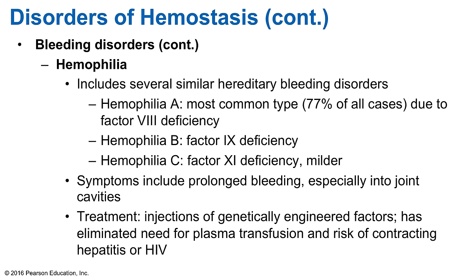Hemophilia refers to several hereditary bleeding disorders with similar signs and symptoms. Hemophilia A (classical hemophilia) is the most common, accounting for about 77% of cases, resulting from a deficiency of factor VIII (anti-hemophilic factor). Hemophilia B results from a deficiency of factor IX and, like hemophilia A, is X-linked and affects males. Hemophilia C is due to a deficiency of factor XI, is less severe, and affects both sexes. Symptoms include prolonged bleeding into tissue and repeated bleeding into joint cavities causing disability and severe pain. Treatment now includes genetically engineered clotting factors, which eliminates the risk of HIV and hepatitis infection.